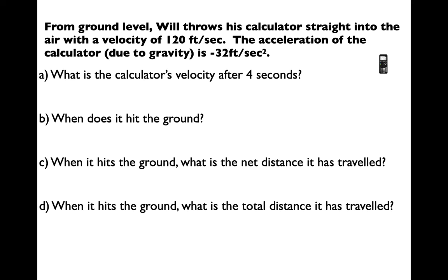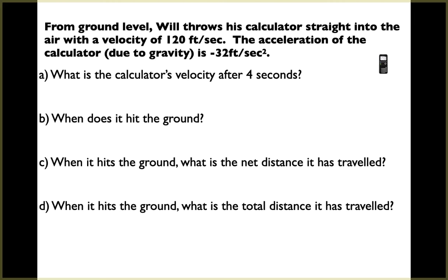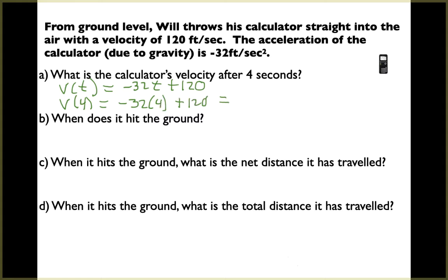From ground level, Will throws his calculator straight into the air with a velocity of 120 feet per second. The acceleration due to gravity is negative 32 feet per second squared. We need our velocity function: v(t) equals negative 32t plus 120, using the initial velocity of 120 feet per second. To find the velocity after four seconds, plug in t equals 4: negative 32 times 4 plus 120 equals negative 128 plus 120, giving negative 8 feet per second.